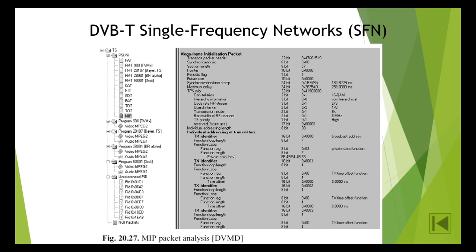This may be of interest if two transmitters in an SFN are very far apart and are approaching the limit of the guard interval — for example, a DVB-T network in southern Bavaria with the Olympic Tower in Munich and the Mount Wendelstein transmitter at a distance of 63 kilometers — or if the guard interval has been chosen to be very short for reasons of data rate, for example in Australia (Sydney) where the guard interval value is 1/16.